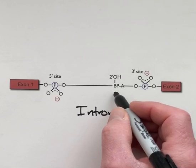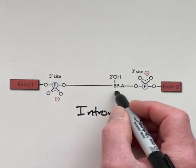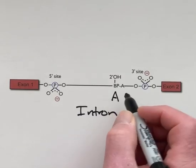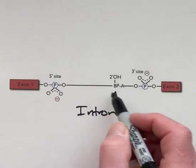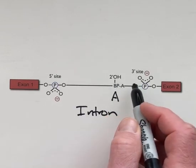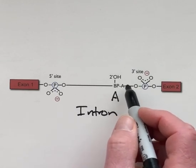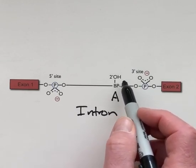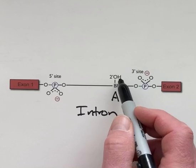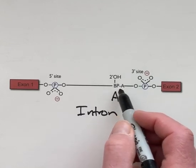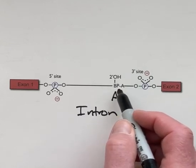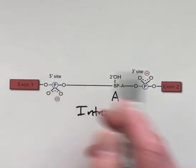And then there's a special adenine right in here somewhere in the middle of the intron, generally fairly close to the three prime site, that is called the branch point A. The chemistry begins with this two prime hydroxyl of the adenine nucleotide attacking here at the five prime site.